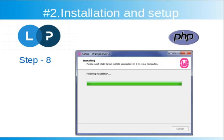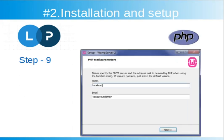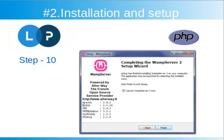This screen shows the status of your installation process. When the progress bar is complete, you will see the PHP mail parameter screen — just click next and launch your WAMP server. So friends, here is the full WAMP installation process.